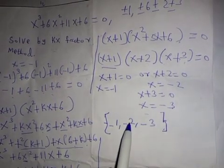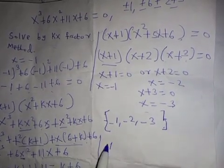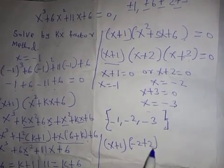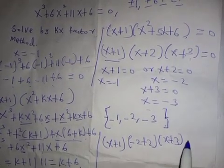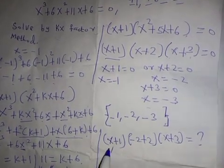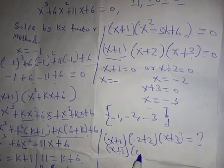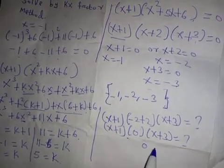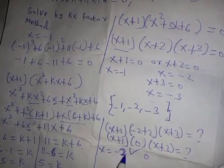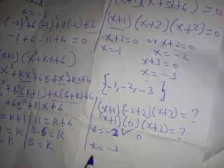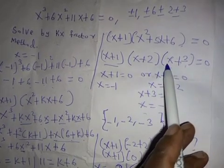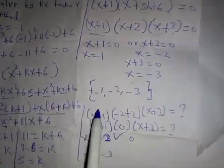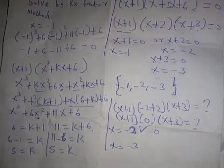We can also verify x equals negative two by substituting into the factored form: x plus one, times negative two plus two, times x plus three. Negative two plus two equals zero, so the whole product is zero — confirmed correct. Similarly for x equals negative three, substituting gives a zero factor, so the product is zero. All three solutions are verified correct.